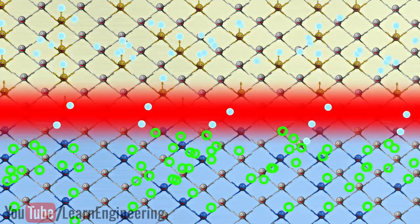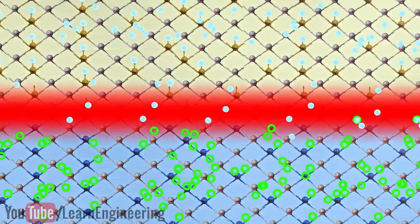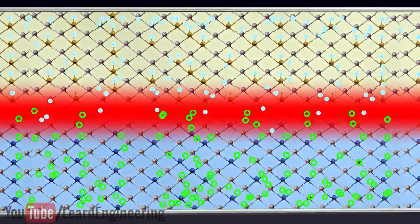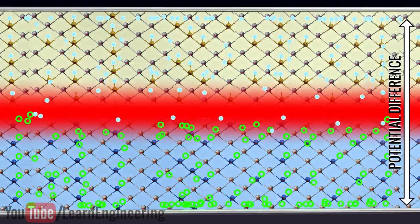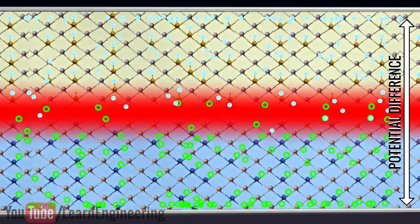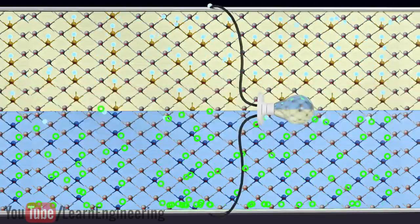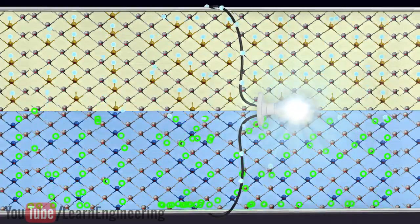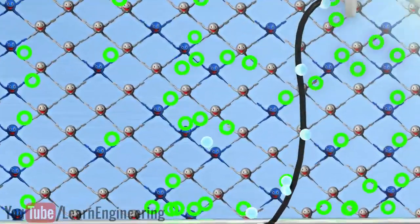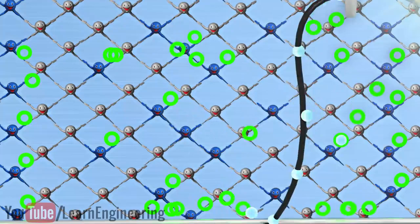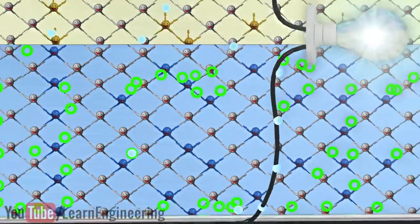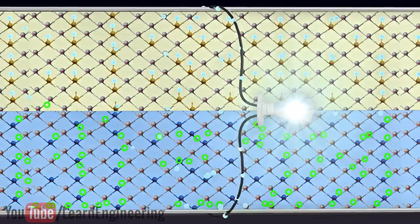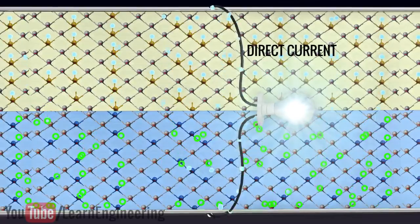The electric field in the depletion region drives the electrons and holes out of the depletion region. Here we observe that the concentration of electrons in the n-region and holes in the p-region become so high that a potential difference will develop between them. As soon as we connect any load between these regions, electrons will start flowing through the load. The electrons will recombine with the holes in the p-region after completing their path. In this way, a solar cell continuously gives direct current.